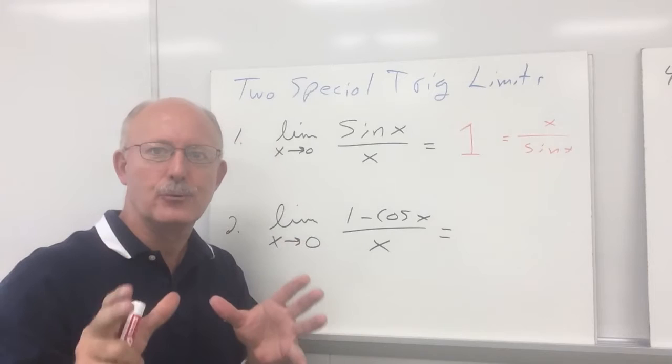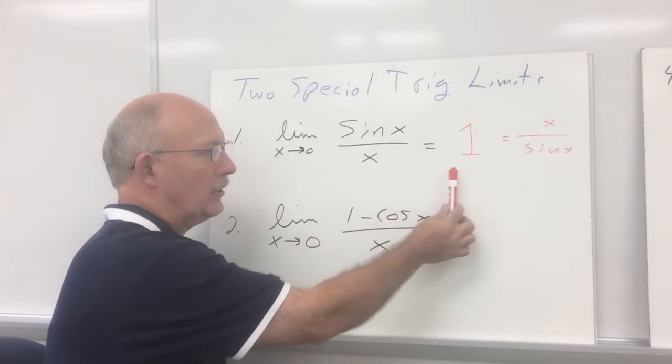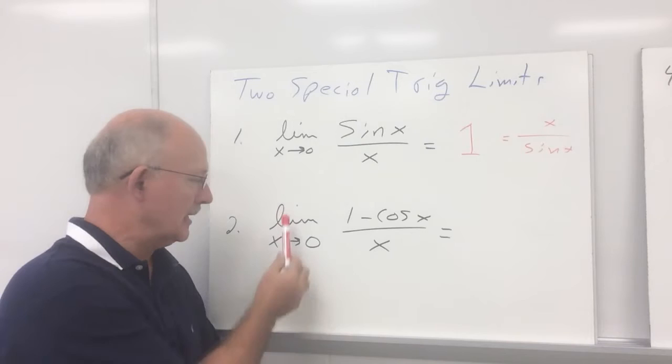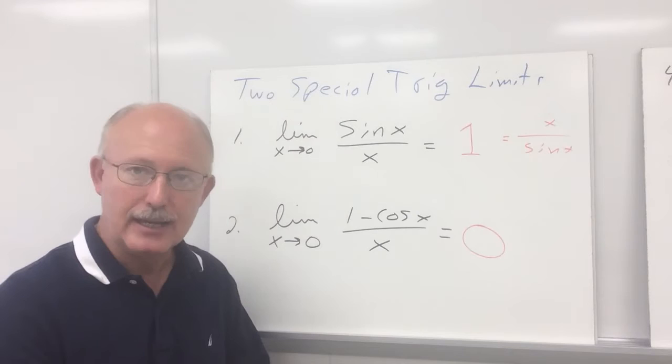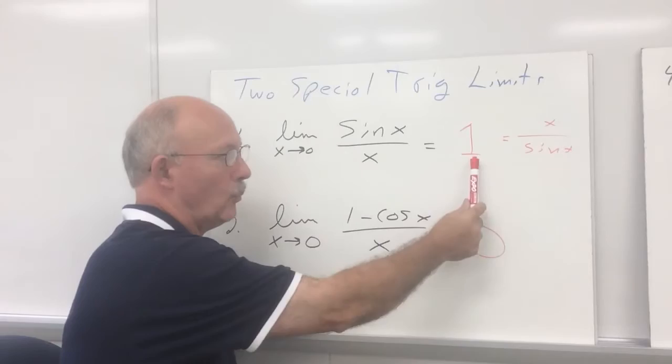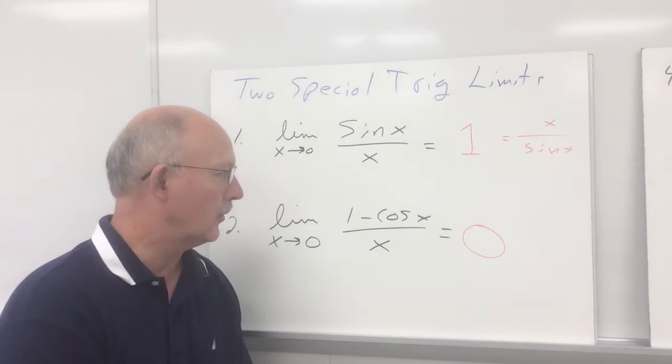Sometimes you may have to do a little bit of rearranging using some of your identities to get sin x over x, but if you can, you're going to replace it with 1. The second special trig limit is the limit as x approaches 0 of 1 minus cos x over x, and this will always evaluate to 0. So to review: the limit as x approaches 0 of sin x over x is 1 — also true for its reciprocal x over sin x — and the limit as x approaches 0 of 1 minus cos x over x is 0.